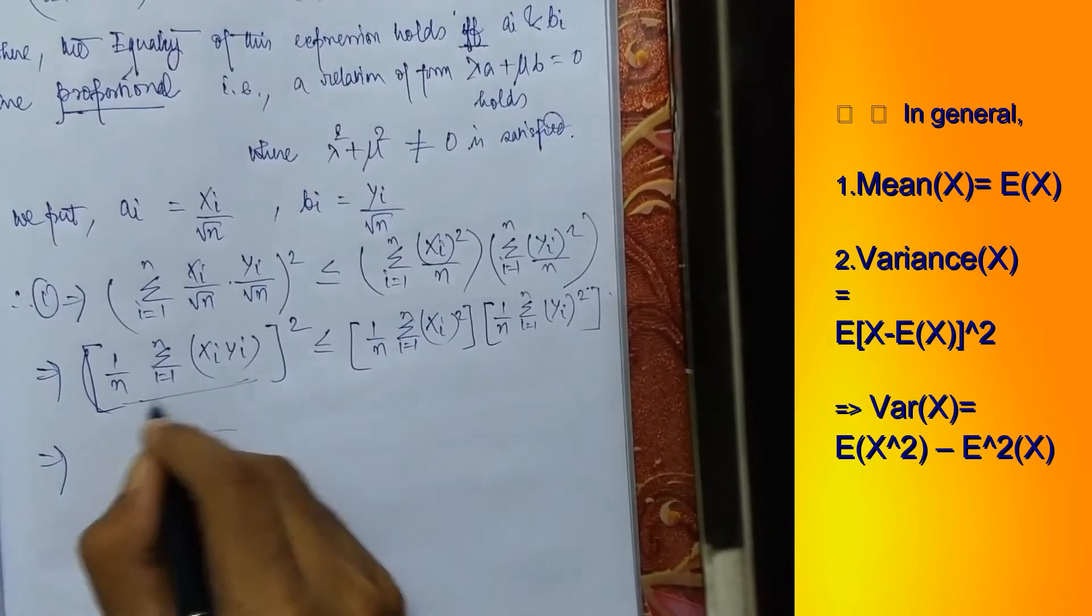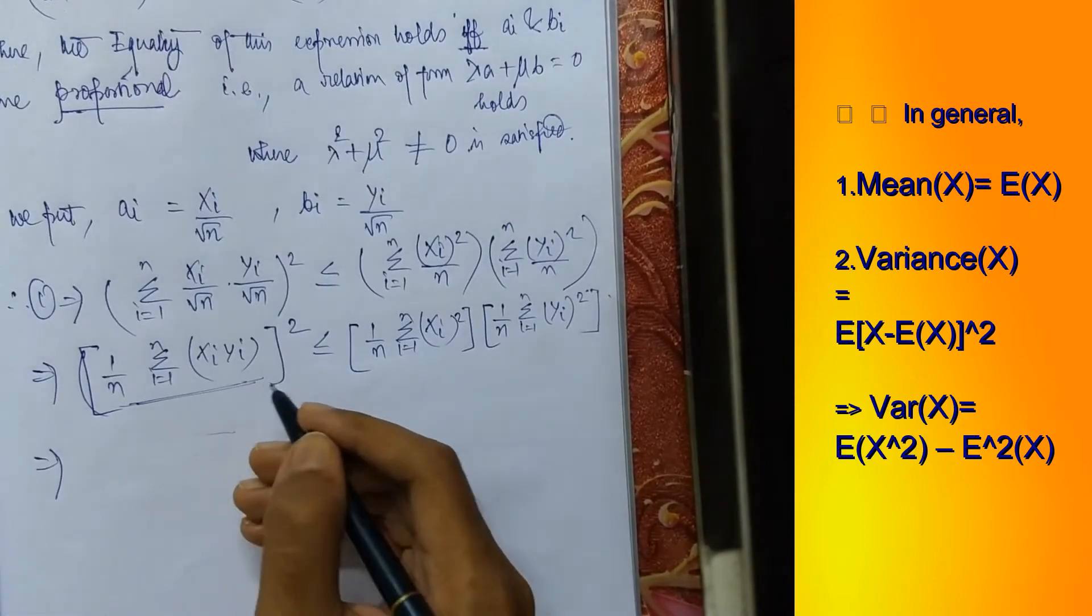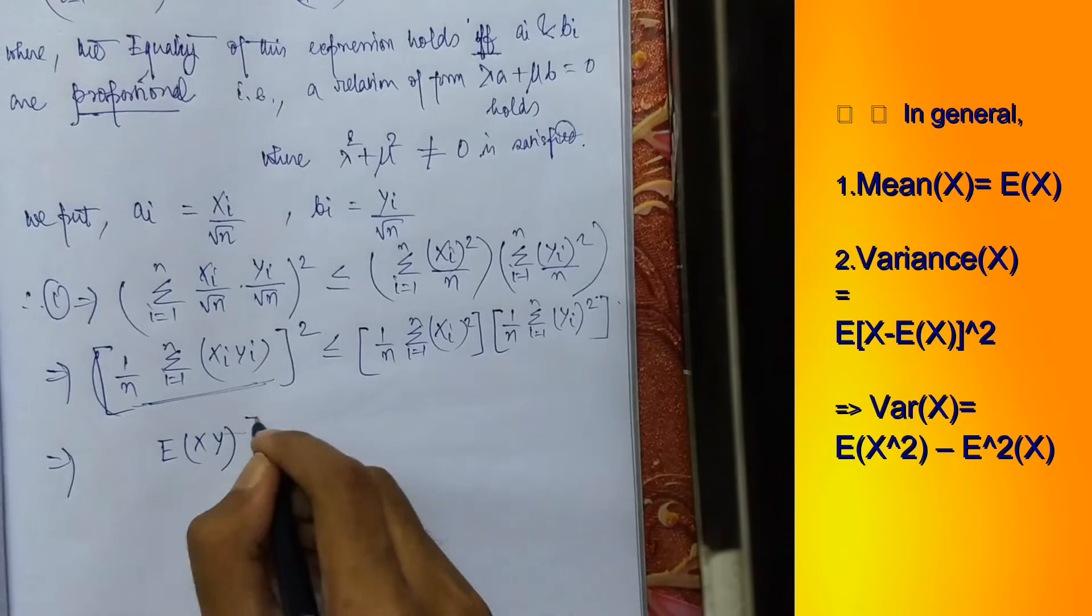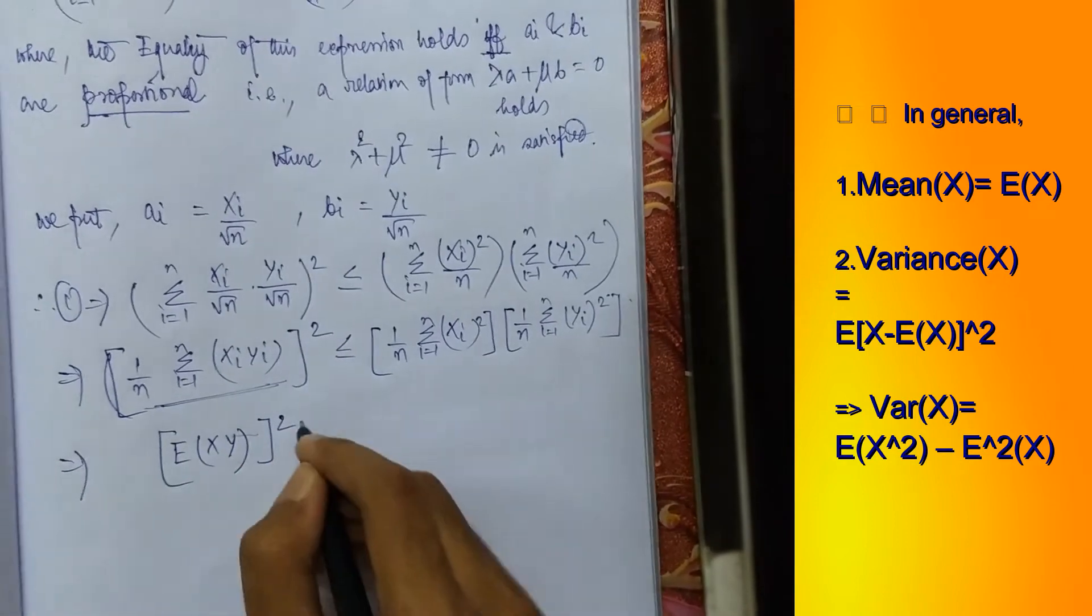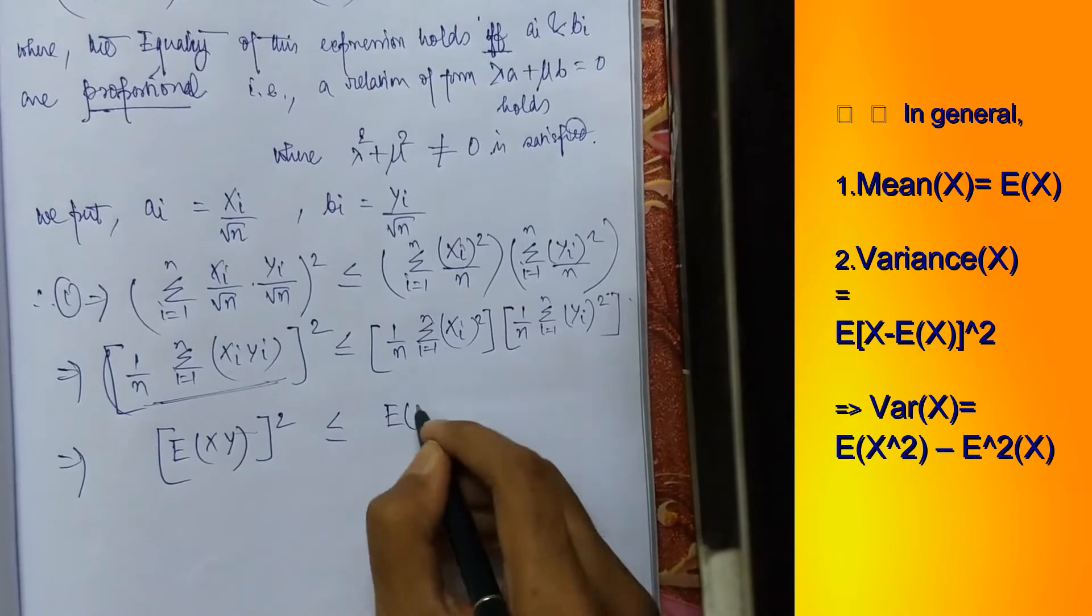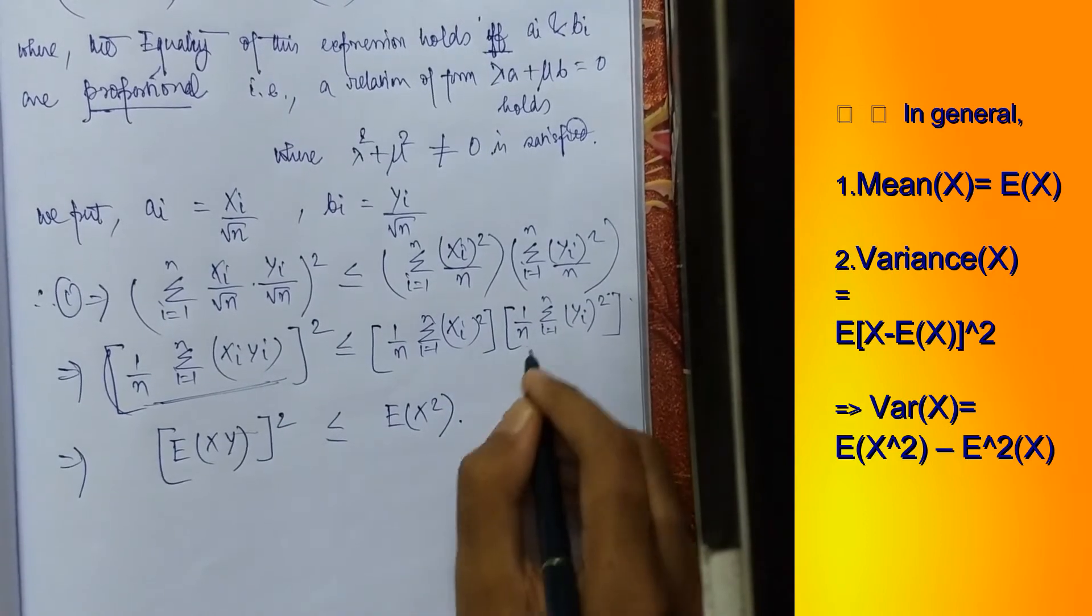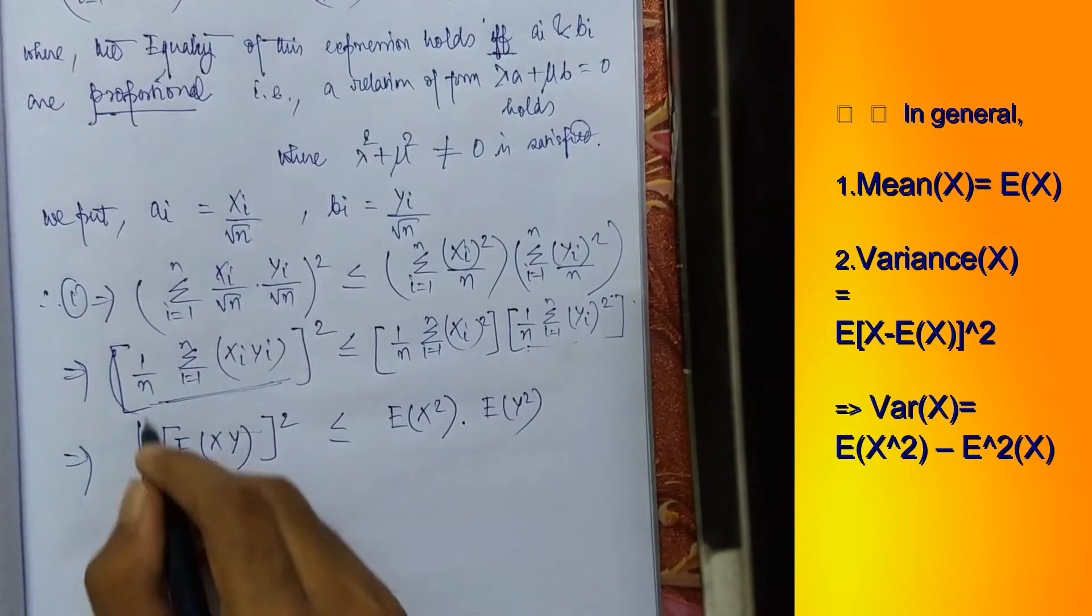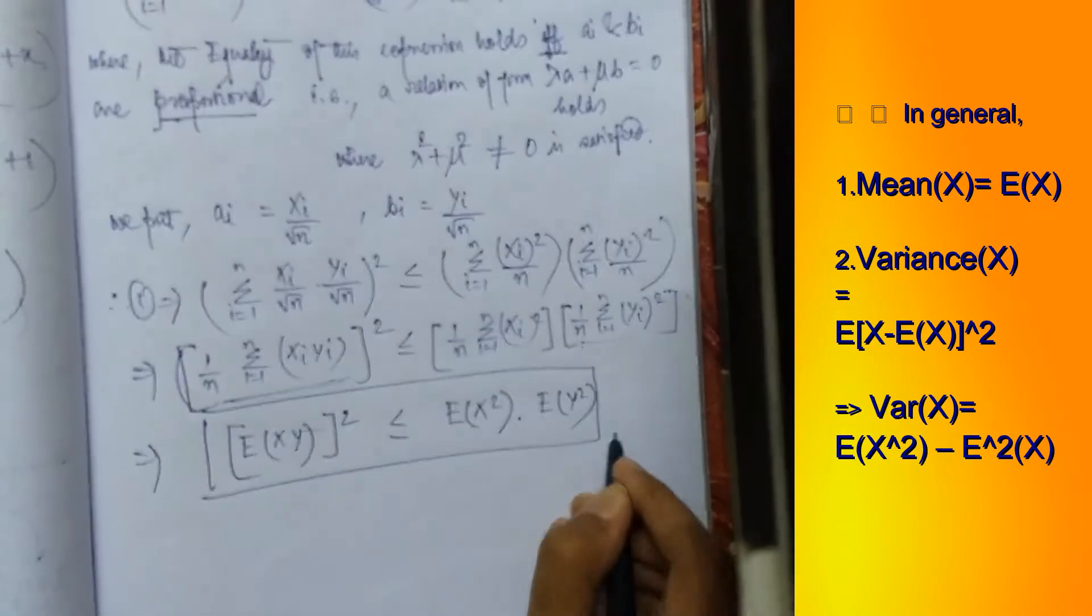This, the expression within the bracket, this denotes us expectation of XY and we have square as it is. This represents expectation of X square into this part which represents expectation of Y square. And voila we have the proof done.